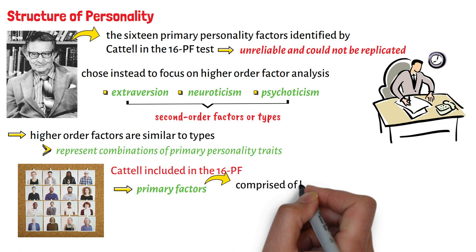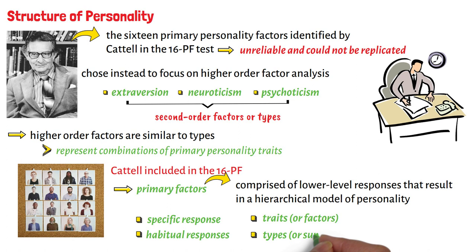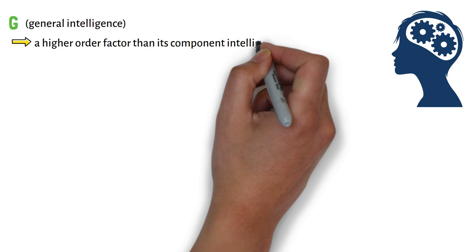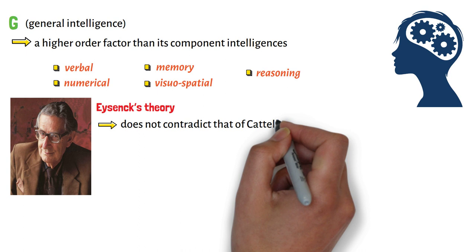Even the primary factors are comprised of lower-level responses that result in a hierarchical model of personality, namely: specific responses, habitual responses, traits or factors, and finally types or superfactors. Similarly, G, or general intelligence, is a higher-order factor than its component intelligences — for example, verbal, numerical, memory, visuospatial, and reasoning. Thus, Eysenck's theory does not contradict that of Cattell, but rather looks at a higher level of personality structure.